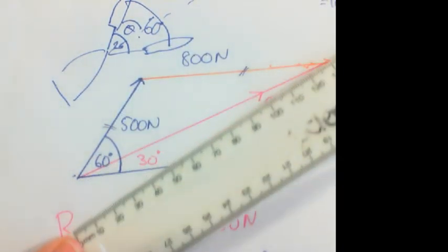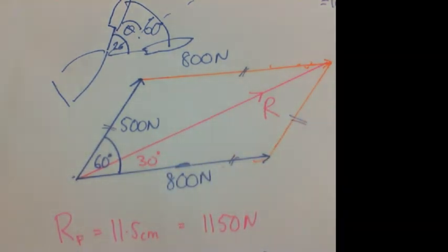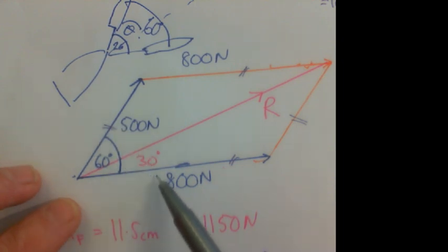You might need a protractor to measure the angle from there to there if they give you the angle. Or they might have already drawn the blue lines for you and just expect you to do the orange lines and the pink line.